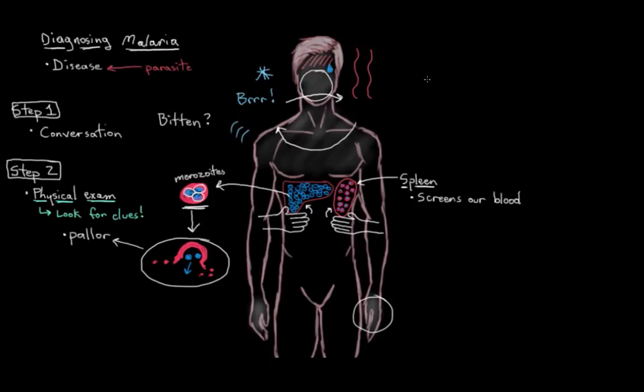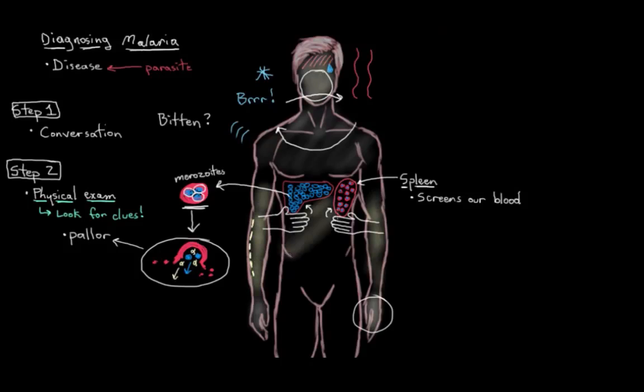And then finally, we might look for jaundice, which will happen when bilirubin from inside the red blood cells gets out and deposits under our skin. Good, so that's step two, that's our physical exam.